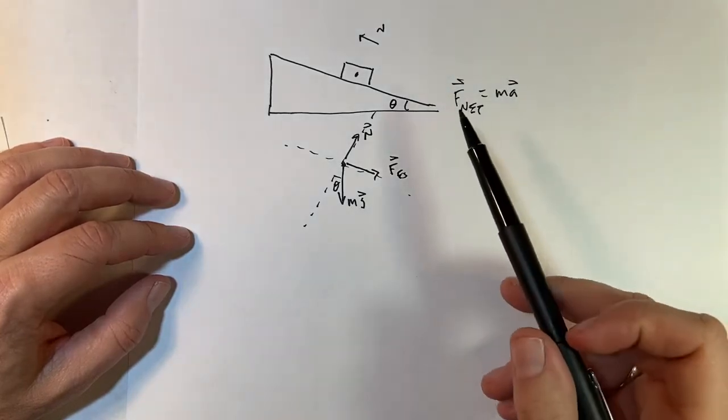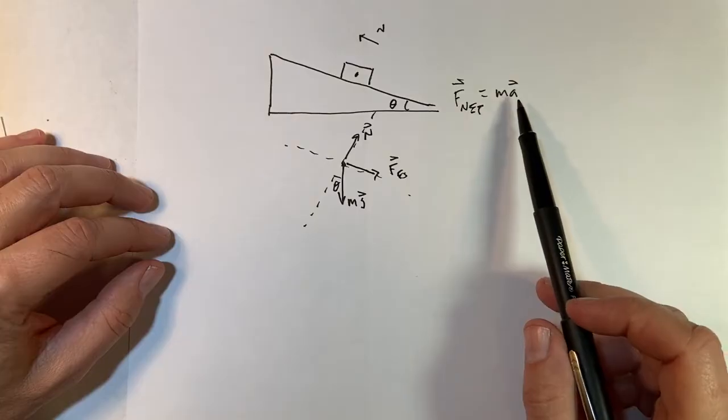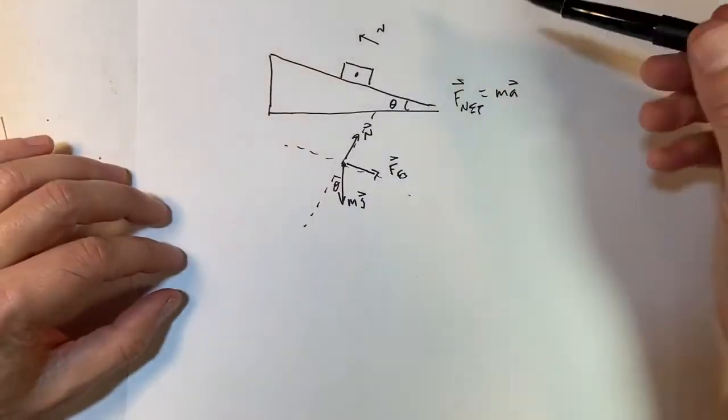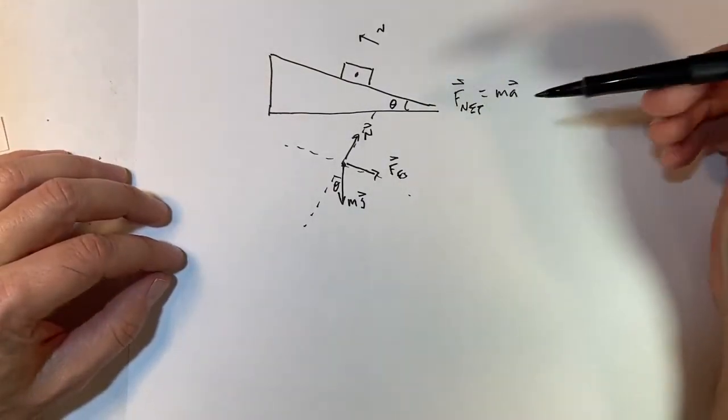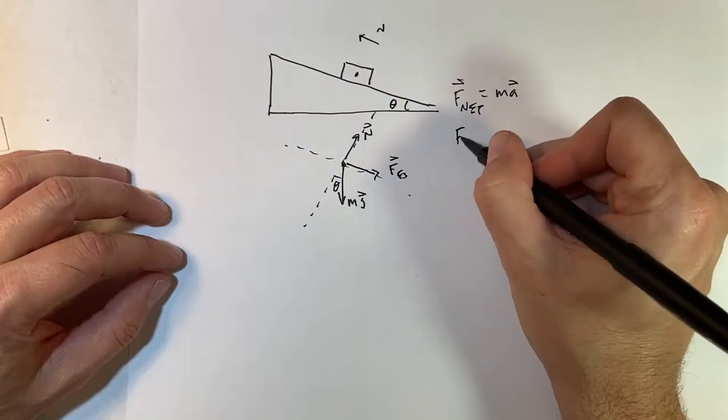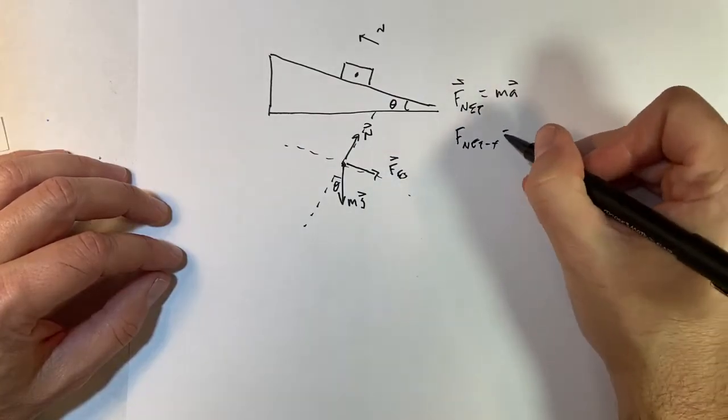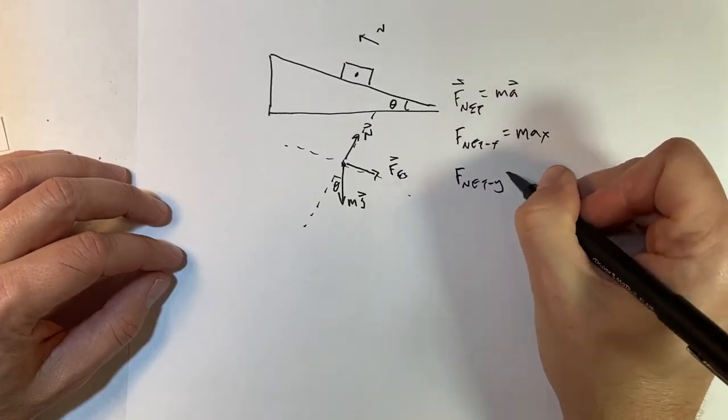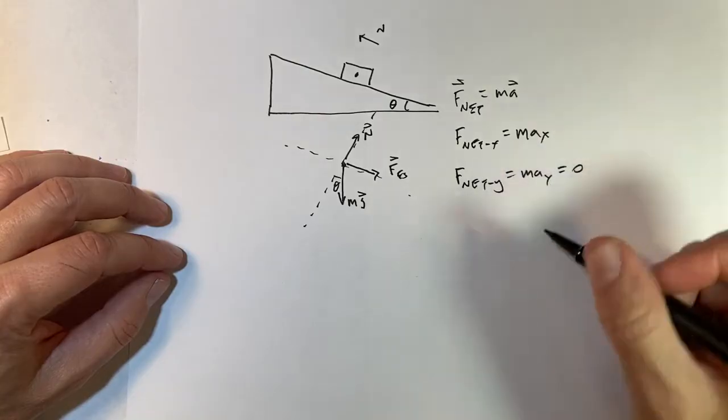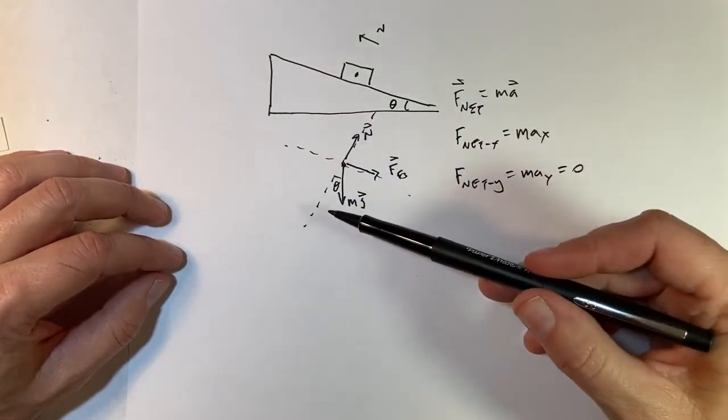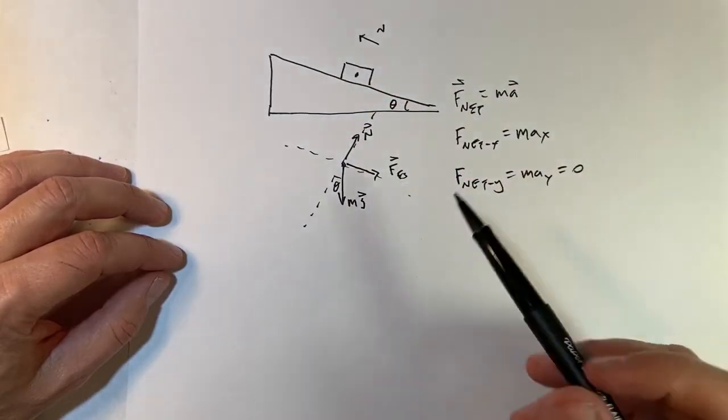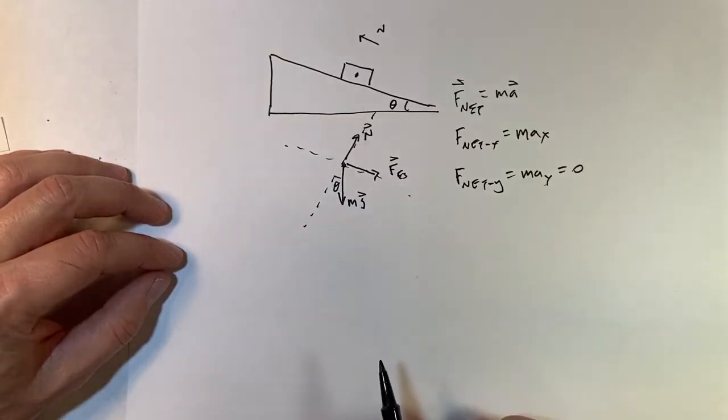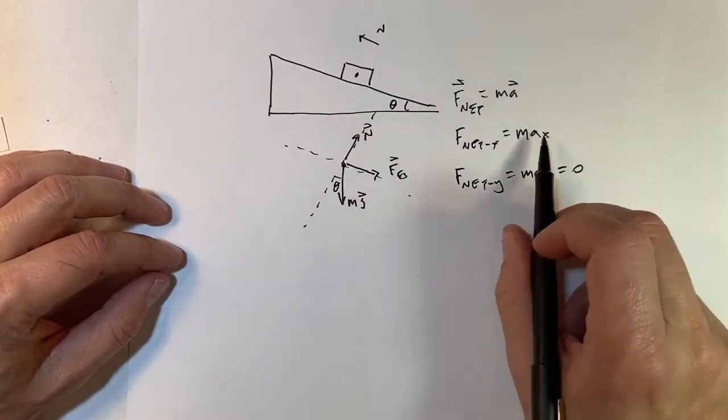Because here I have f net vector is ma. And you'll notice what we're doing in here. We're actually doing two types. I know the acceleration, one of these accelerations and not the other. So let's write this as f net x equals ma x, f net y equals ma y equals zero. In this case, I know the acceleration in the y direction is zero because it stays on the surface of this plane. But I don't know the acceleration in the x direction.